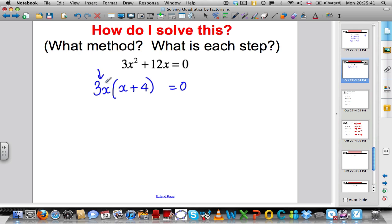You've got an expression times another expression equals 0. So, either 3x is 0 or x plus 4 is 0. If 3x is 0, the only solution is x is 0. And x plus 4 equals 0, the only solution is x is minus 4.